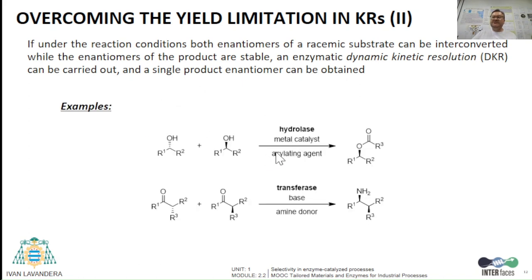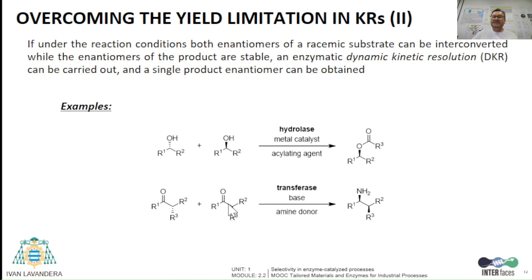Examples of these transformations are the combination of a hydrolase with a metal catalyst to transform a racemic alcohol into a single ester enantiomer product, or the action of a transferase in the presence of a base to access diastereomerically pure amines from racemic alpha-substituted ketones.